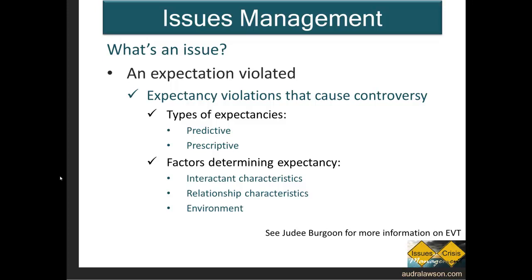Expectancy violation theory emphasizes that an individual's perception guides us — it guides our behaviors, it guides our attitudes about the organization and about other people. While we're communicating or watching an organization or an individual communicate, we create an expectation of how others will react and what people will say. When these aren't met — either someone overperforms and exceeds our expectations or doesn't quite meet them — there is this potential for the expectancy violation. Certainly there are cultural values and guidelines that govern how we respond and what are appropriate responses to all this.